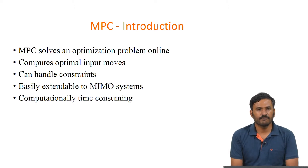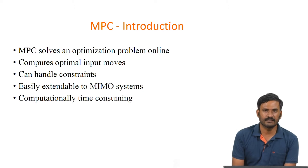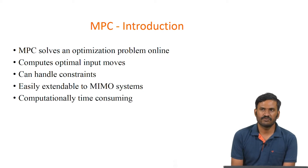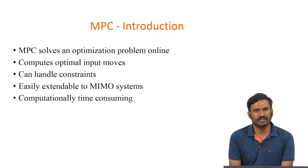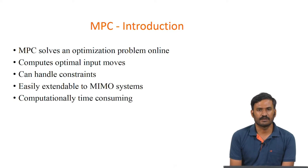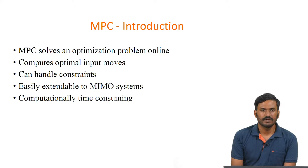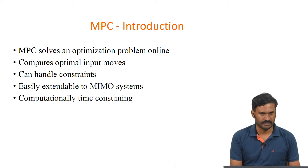If we have more inputs and more outputs — for example a 25-by-20 system where we have 25 outputs and 20 inputs — then such systems will require more computational time in order to calculate the optimal solution for the optimization.